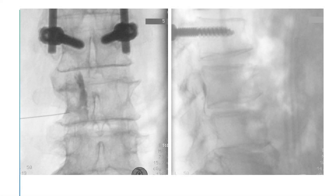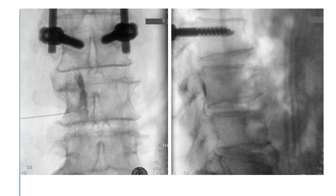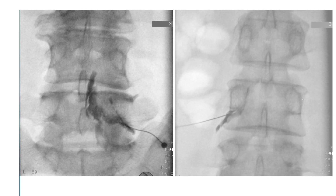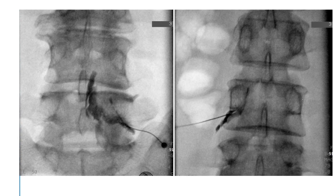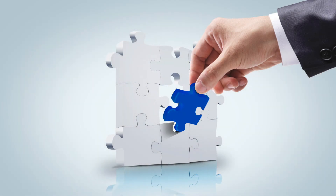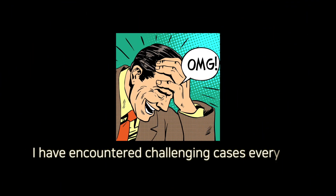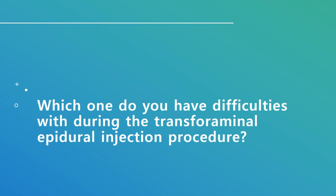The transforaminal epidural or selective nerve root steroid injection is one of the most frequently practiced pain clinic procedures. This procedure aims to relieve radicular symptoms due to paramedian stenosis and paramedian or lateral disc herniation, but it's not always easy. I have encountered challenging cases every day. Which one do you have difficulties with during the procedure? Would you select one of them?